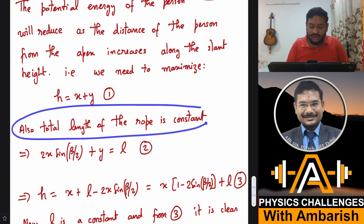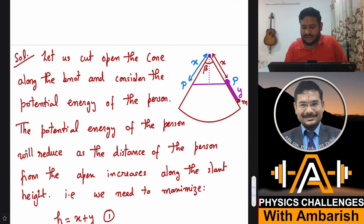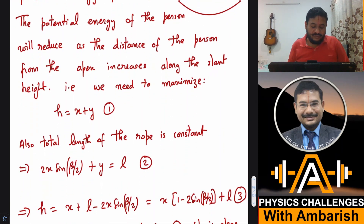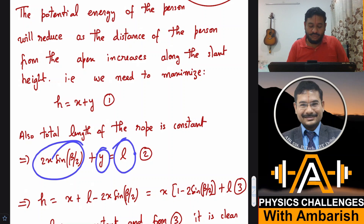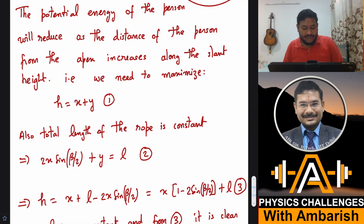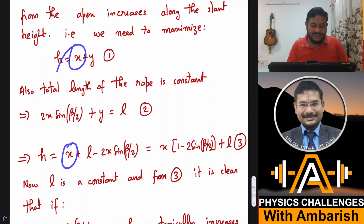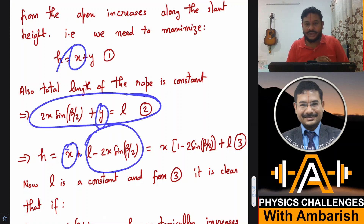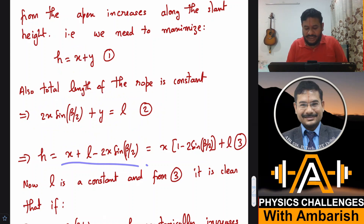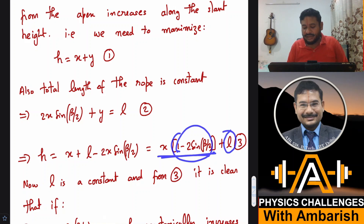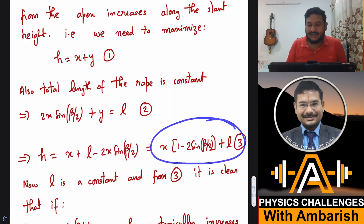The total length of the rope is constant. The loop portion contributes two times X sine(beta/2), since the half-angle is beta/2, plus Y for the hanging part. So the constraint is: two X sine(beta/2) plus Y equals L. Substituting Y from this constraint into H gives H equals X plus (L minus two X sine(beta/2)), which simplifies to H equals X times (one minus two sine(beta/2)) plus L.